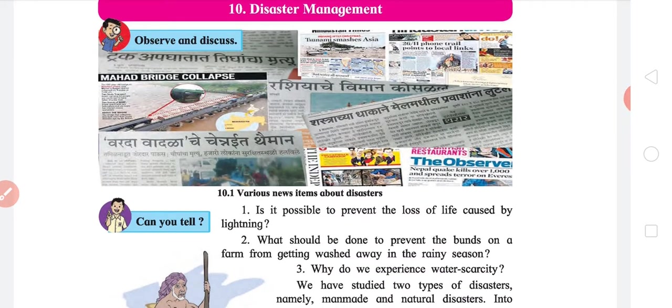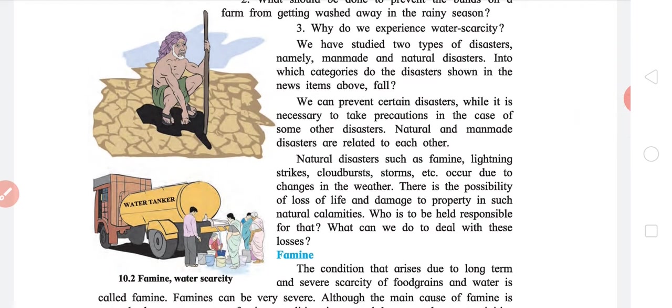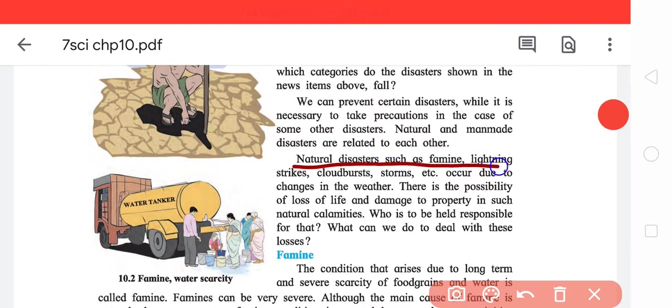Often what happens is that natural disasters are actually aggravated, that is the effect is amplified by man. So as they say, natural and man-made disasters are related to each other. Natural disasters such as lightning strikes, cloud bursts, and storms occur due to changes in the weather.